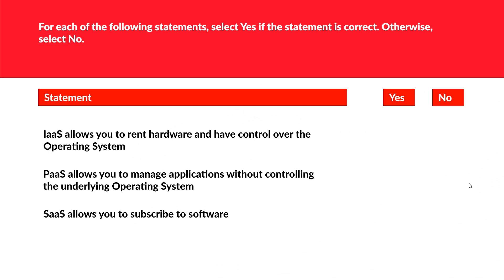Now we have a true or false type question. Select yes or no for the correct statements. First: IaaS allows you to rent hardware and have control over the operating system — this is definitely yes. Second: PaaS allows you to manage applications without controlling the underlying operating system — this is again yes; an example can be Azure SQL Database. Third: SaaS allows you to subscribe to software — yes, one example is O365. So these are all correct.